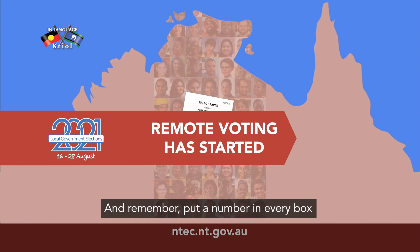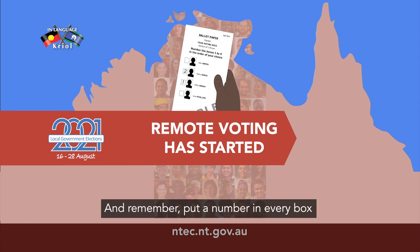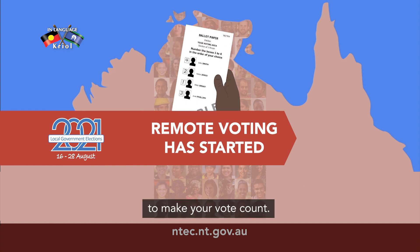Remember, you need to put an order number in every box. Make your vote count. Authorised by the Northern Territory Electoral Commission, Darwin. Thank you, everyone.